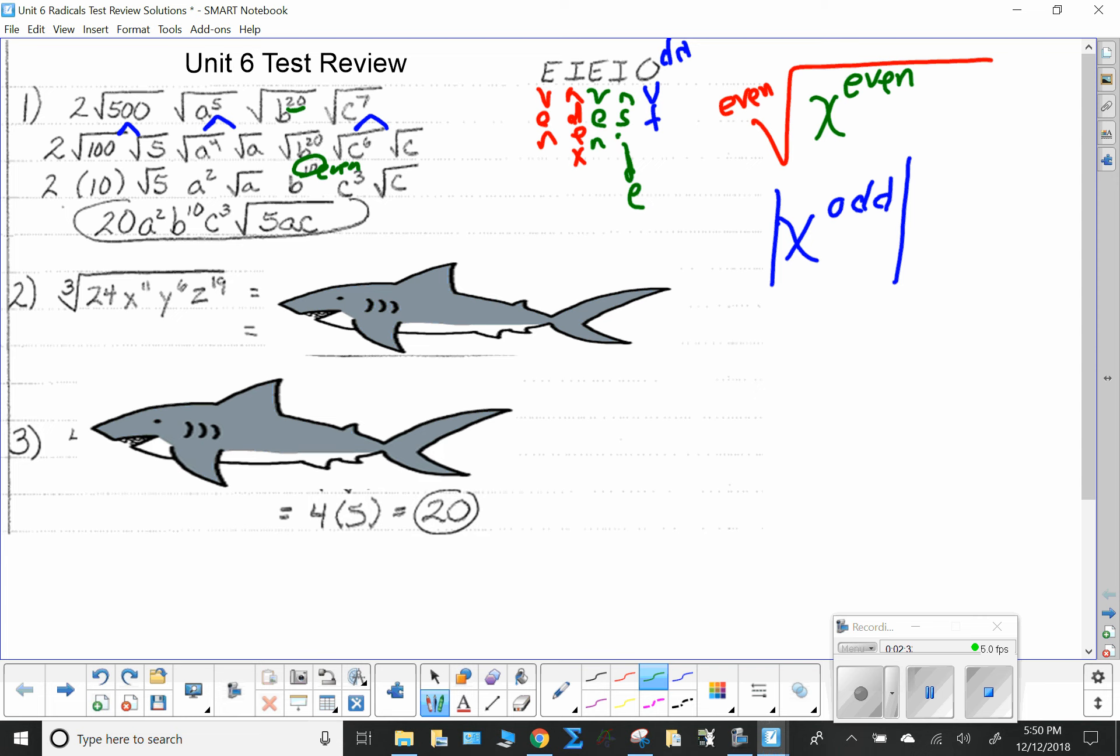And then I get c cubed and a c. Putting it all together: 20 a squared b to the tenth c cubed square root of 5ac. Notice, notice here, I've worked it out. Look, if you are somebody who keeps trying to short-circuit something, if you are somebody who keeps trying not to write things down, it's going to be problematic. Go ahead and write this out.